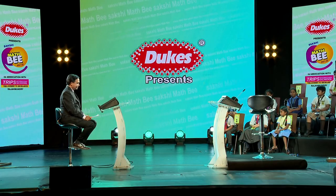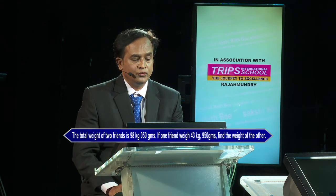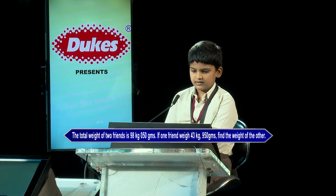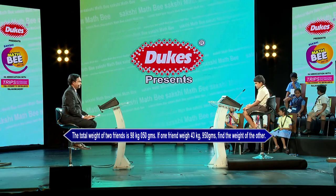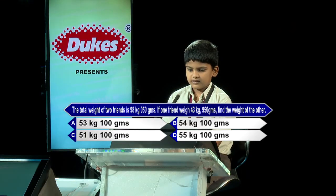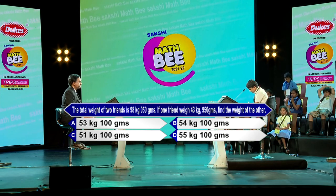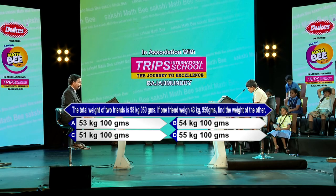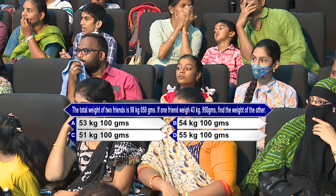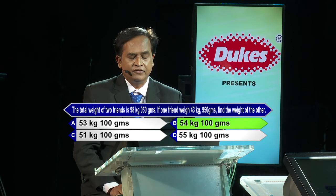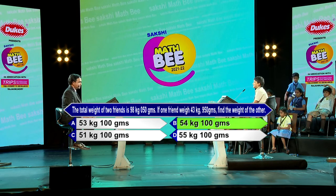So it's only Vihas who has made it to the second round directly; two students are eliminated. Budheep Shankar from KKR Gautam School, please come forward. The total weight of two friends is 98 kgs 50 grams; if one friend weighs 43 kgs 950 grams, find the weight of the other. Options: A) 53 kgs 100 g, B) 54 kgs 100 g, C) 51 kgs 100 g, D) 55 kgs 100 g. Kindly lock option B — 54 kgs 100 grams. Well done, 54 kgs 100 grams is the correct answer.